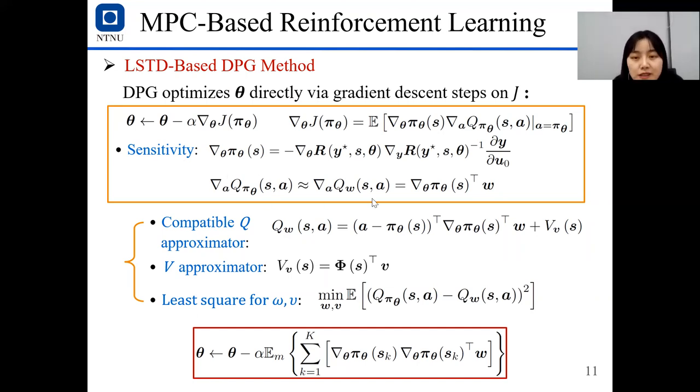And the second part is given by this one, where Q_w is a compatible Q-approximator, and V is a value function approximator. And how should we get this W and V? It's by the least-square formulation, that we want to minimize the error between the approximators and the true value. Finally, theta can be given by this equation.